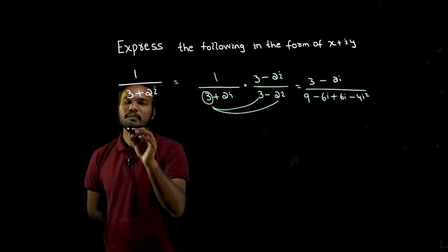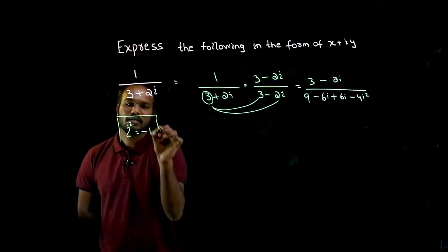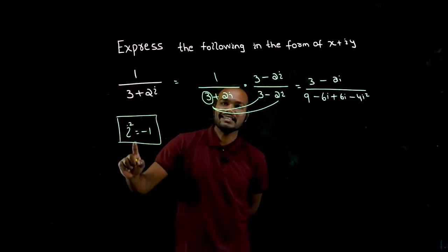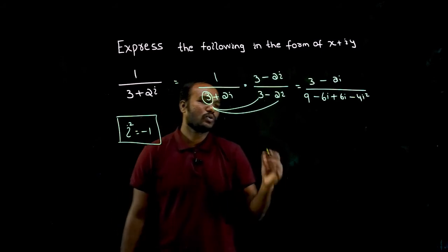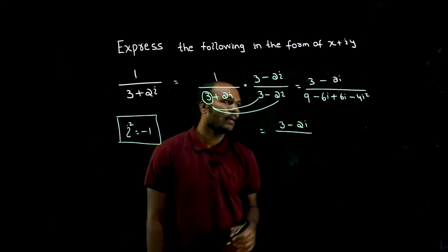What do you need to remember? You need to remember that i square value is minus 1. So I can write this question as 3 minus 2i divided by what do you have, 9.